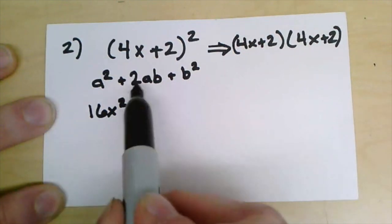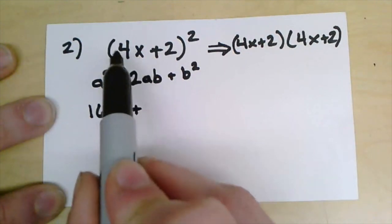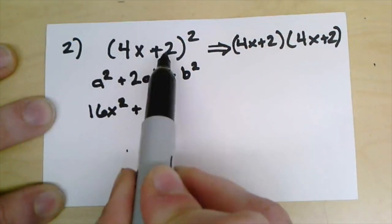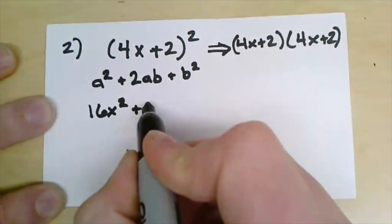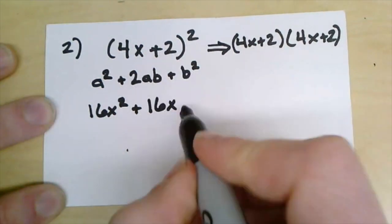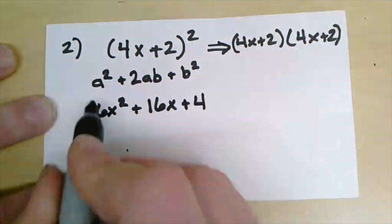For the middle term here, the 2 times a times b, I like to do the a times b first and then just double it. 4x times 2 is 8x, if I double that I'm at 16x. And now I have b squared, well 2 squared is 4, so I'm going to have a plus 4.